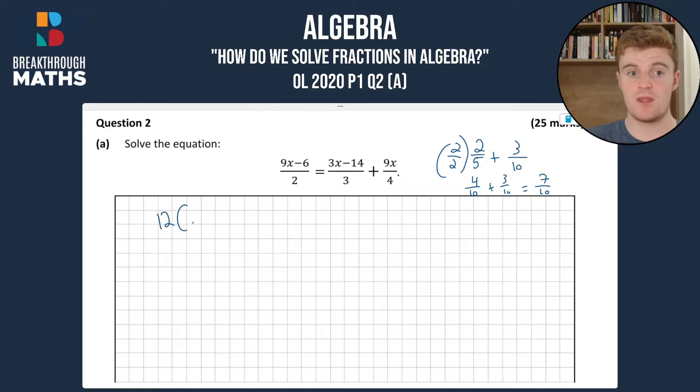So we're going to do 12 by 9x minus 6 over 2 equals 12 by 3x minus 14 over 3 plus 12 by 9x over 4.